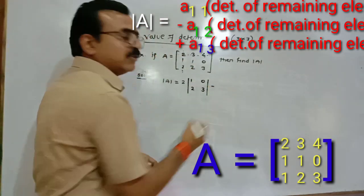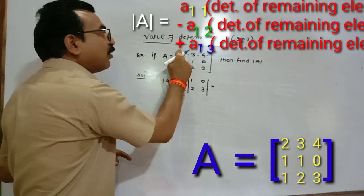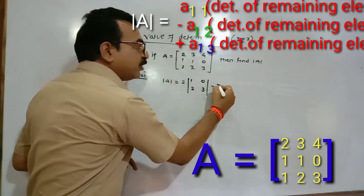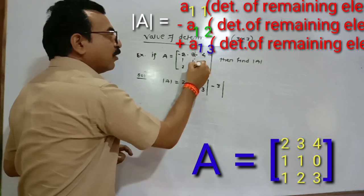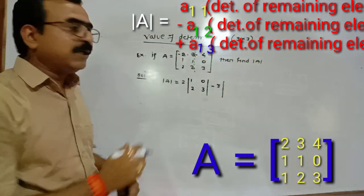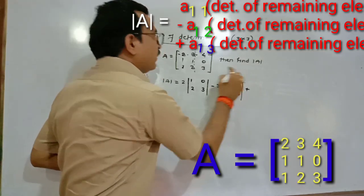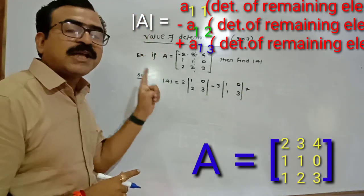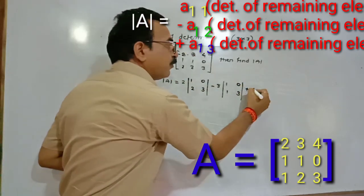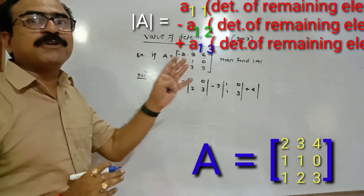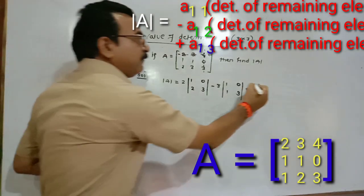Then check the formula: minus A12, the element in the first row and second column, which is 3. Delete the first row and second column — 4 elements remain. Find its determinant: 1, 0, 1, 3. Then plus A13, the element in the first row and third column, which is 4. Write down 4 multiplied by the determinant of the remaining elements after deleting the first row and third column — 4 elements remain.